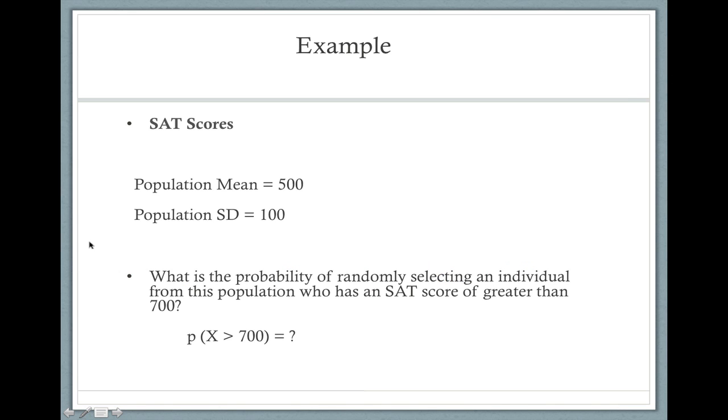So now let's walk through an example. Let's pretend that I have a whole population of SAT scores with a mean of 500 and a standard deviation of 100. The question we might ask related to probability is, what is the probability of randomly selecting an individual from this population who has an SAT score greater than 700?